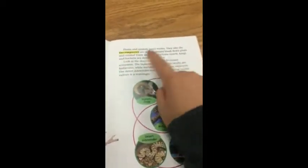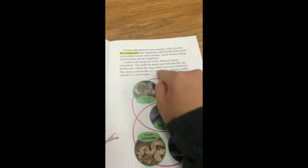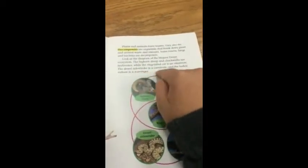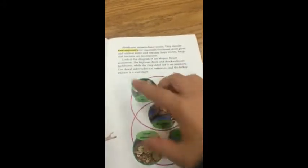Look at the diagram of the Mojave Desert ecosystem. The bighorn sheep and chuckwalla are herbivores, while the ring-tailed cat is an omnivore. The desert sidewinder is a carnivore, and the turkey vulture is a scavenger.